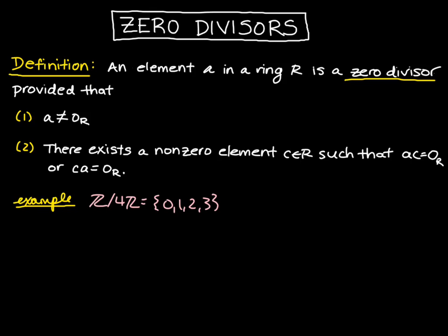So let's start with one. That's a non-zero element. When we multiply one by two or three, we don't get zero. However, if we consider two, if we multiply two by itself, we get four, which is equal to zero. And so that means two is a zero divisor in Z mod 4Z.